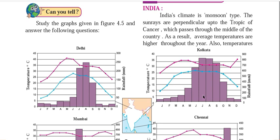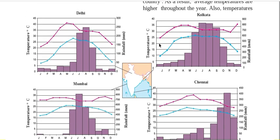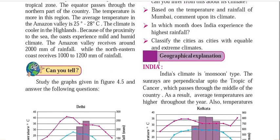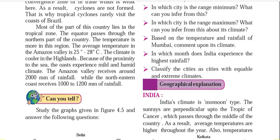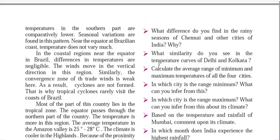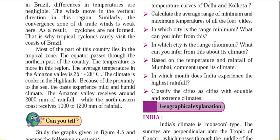Now let's look at statistical data from different cities of India and analyze it. We have four metropolitan cities: Delhi, Mumbai, Chennai, and Kolkata. Based on bar graphs showing rainfall and temperature, the first question is: what difference do you find in the rainy season of Chennai compared to the other cities of India, and why?